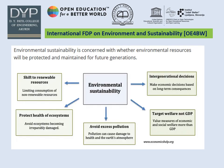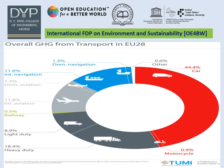How does the environment achieve sustainability? Through a shift to renewable resources by protecting the health of ecosystems. The transport sector contributions are: international aviation 11.8%, railway 0.5%, domestic aviation 1.3%, international navigation 11.6%, domestic navigation 1.3%, and others 0.6%.